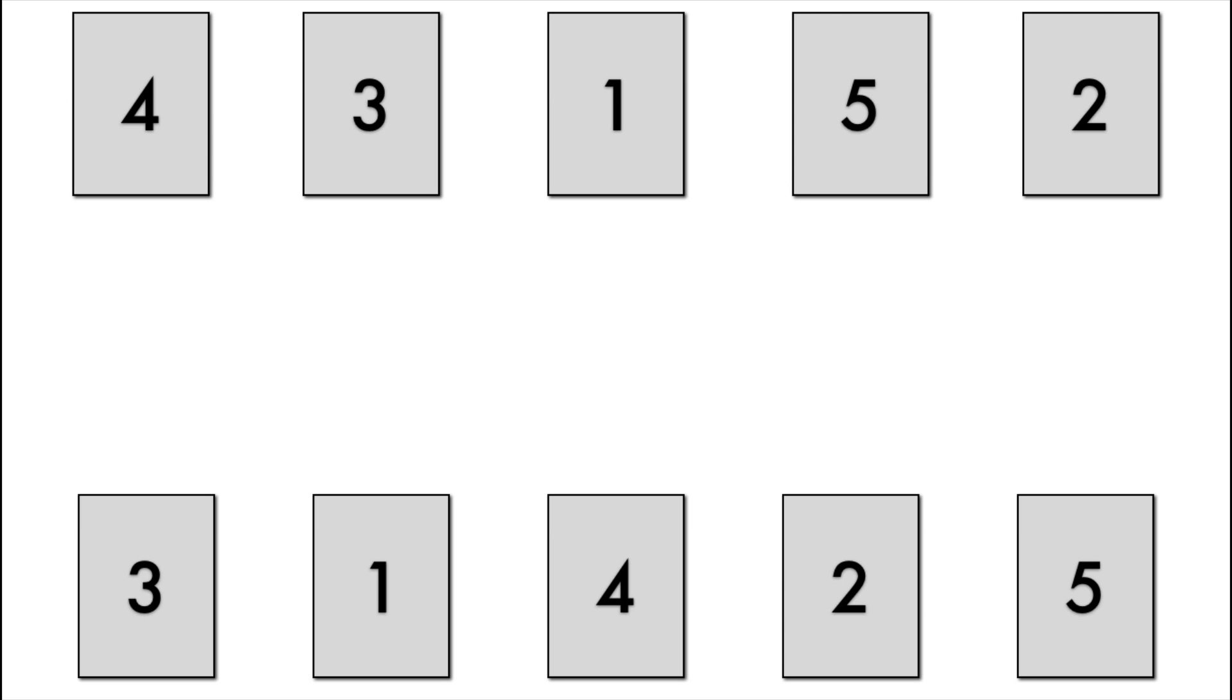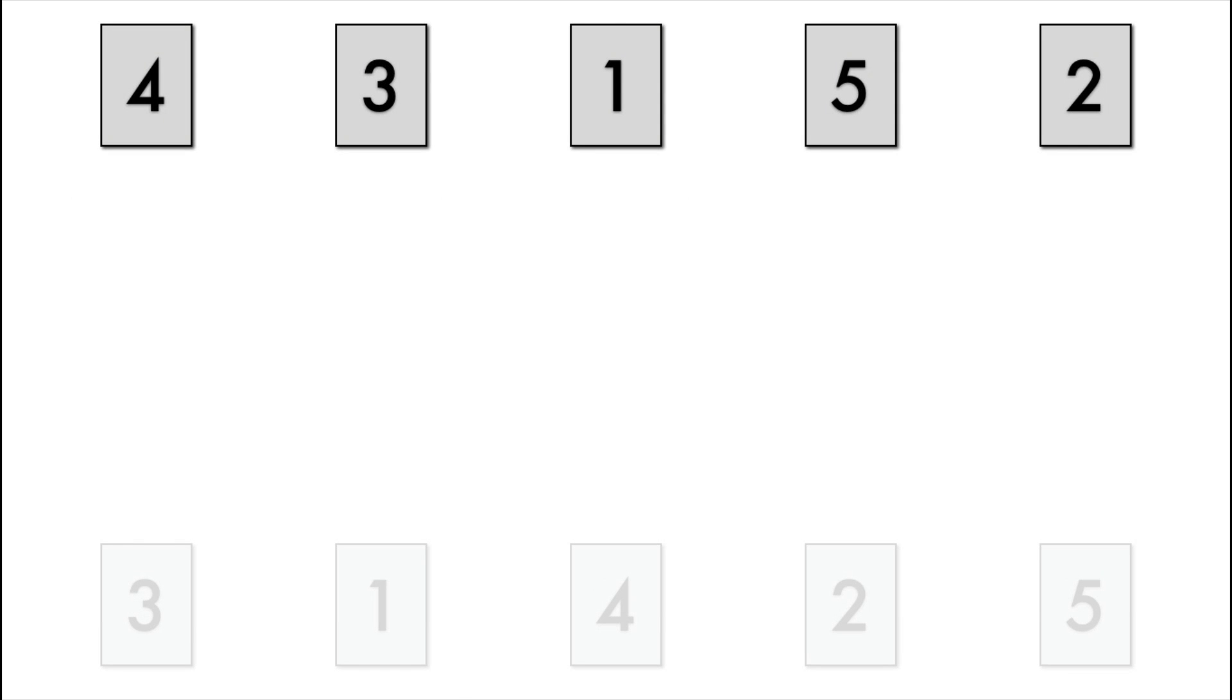We ended up with 3, 1, 4, 2, 5 at the bottom. I want to shrink these down a little bit just so we have some more room, and I grayed out the bottom because we're not there yet. We're going to start off at the top.